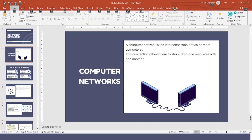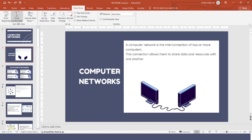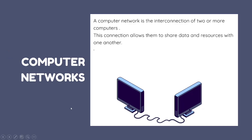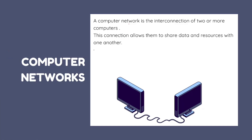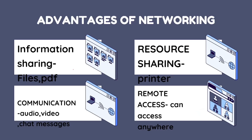I'm giving you the important keywords on how to write that answer. This question may come as a one, two, or three marker. A computer network is an interconnection of two or more computers — this is an important point you must mention. The second point is that the connection allows them to share data and resources with one another. These are the two important keywords to explain computer network.